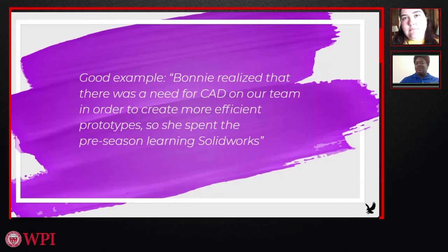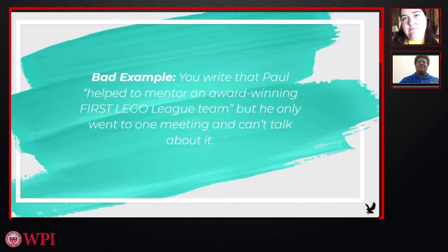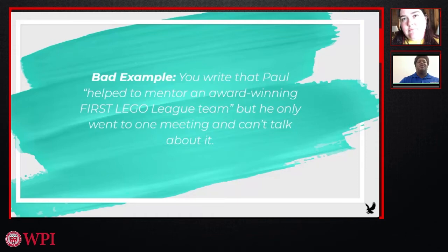Here's one good example: 'Bonnie realized that there was a need for CAD on our team in order to create a more efficient prototype, so she spent the preseason learning SolidWorks.' This explains that she found a need on the team that needed to be filled and went out of her way to fill that role. A not-so-good example would be writing that Paul helped mentor an award-winning FIRST Lego League team, but he only went to one meeting and can't talk about it. As a judge, if I see that a student made a very impactful contribution, I'm really going to want to know why that was meaningful to them, how they got involved, and what their specific contributions were. Anything you include in the essay is fair game, especially things that jump out, so make sure the student can talk about it.